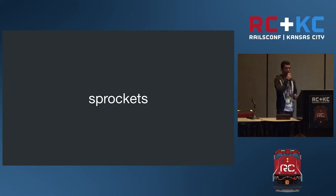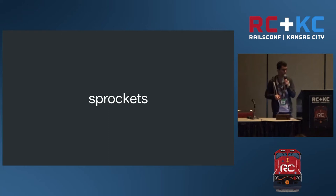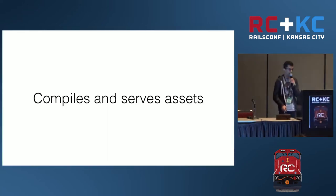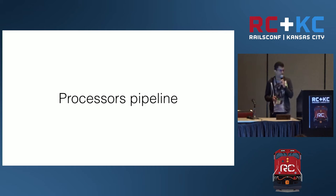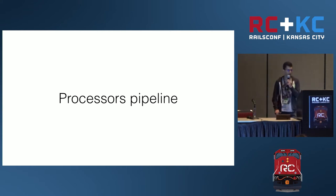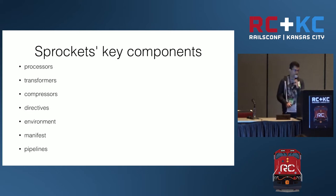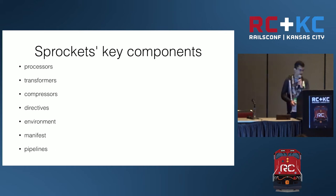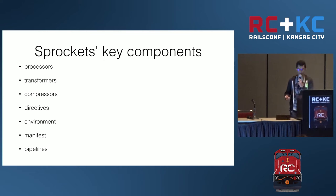The first gem I'm going to talk about is Sprockets. It's the gem responsible for compiling and serving all assets, and it defines a processing pipeline so you can actually extend and build different pipelines. Sprockets has some key components: processors, transformers, compressors, directives, the Sprockets environment, the manifest, and the pipelines themselves.